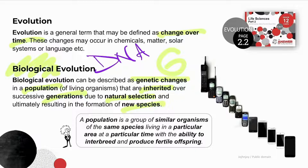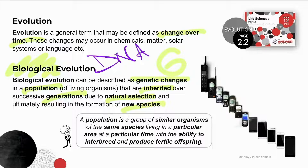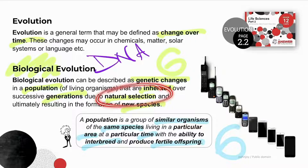Biological evolution does not refer to changes in individuals but changes in populations. A population is a group of similar organisms of the same species living in a particular area at a particular time, with the ability to interbreed and produce fertile or viable offspring. Note that biological evolution also relies on the mechanism of natural selection.